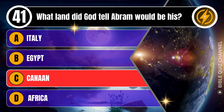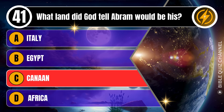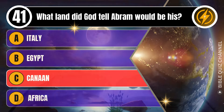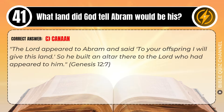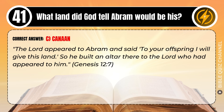Correct answer: C. Canaan. Explaining the Bible — The Lord appeared to Abram and said, 'To your offspring I will give this land.' So he built an altar there to the Lord who had appeared to him. Genesis, chapter 12, verse 7.